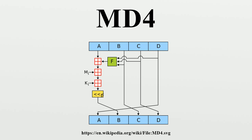A theoretical pre-image attack also exists. A variant of MD4 is used in the eDonkey2000/eMule peer-to-peer networks to provide a unique identifier for a file. MD4 was also used by the rsync protocol.